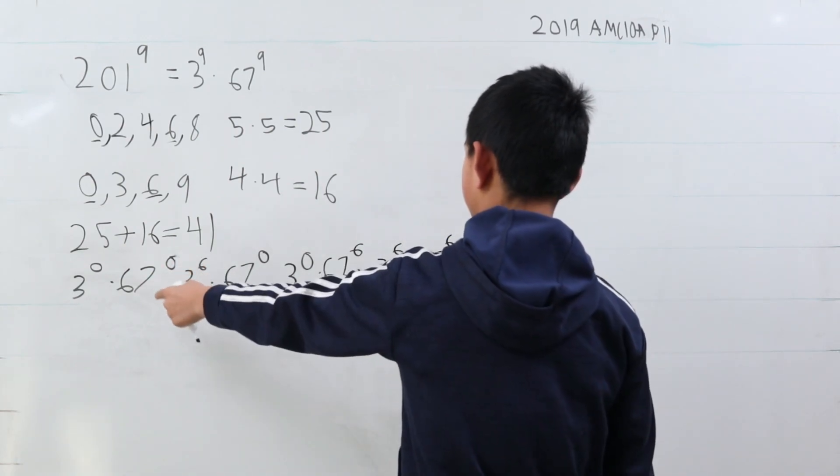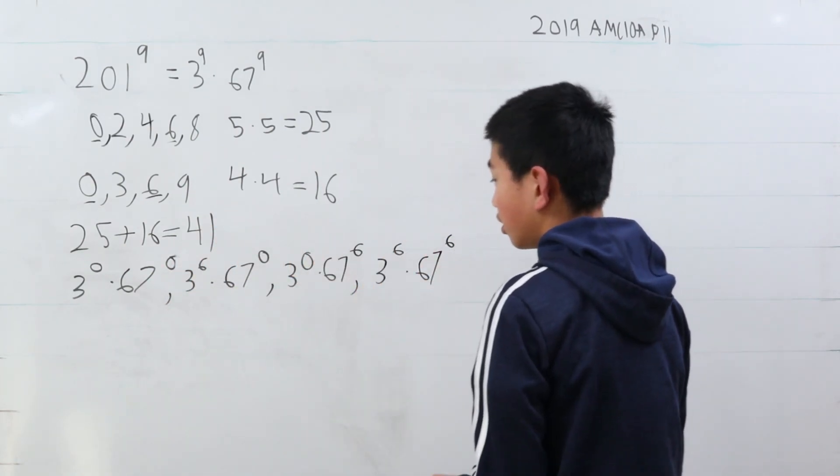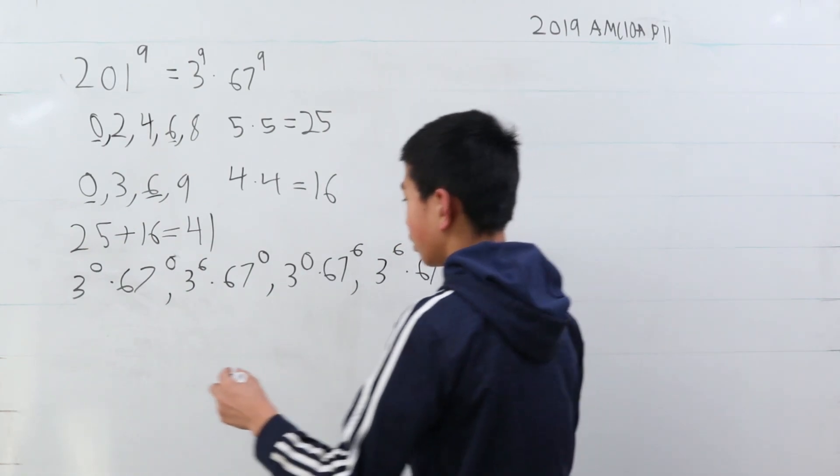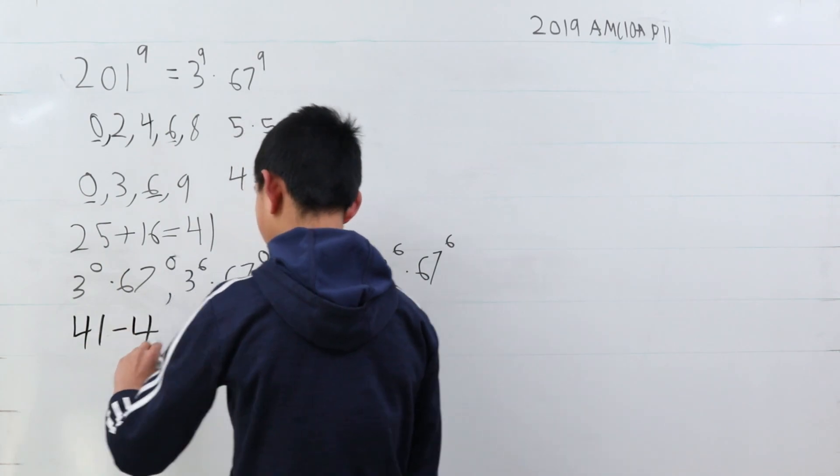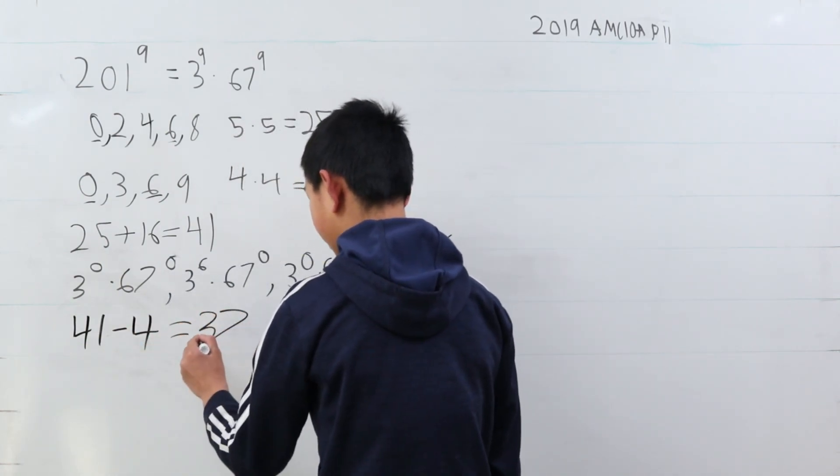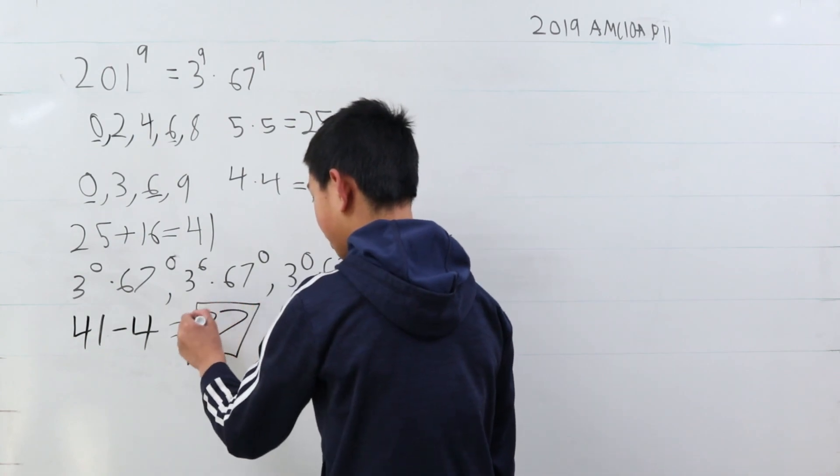This gives us 1, 2, 3, 4. 4 that we overcounted. So, 41 minus 4 gives our grand total of 37. That is going to be our answer.